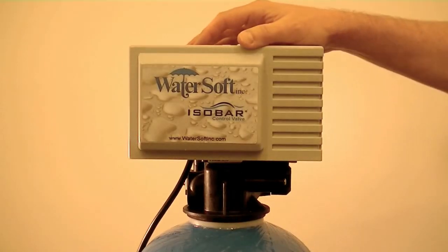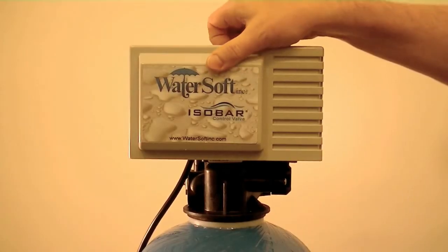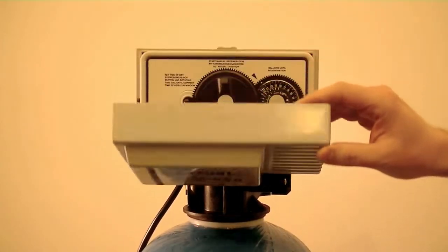This is the ISOBAR-1 demand control valve and we're going to go over how to set it up. So after it's been installed, you want to take a look at it.